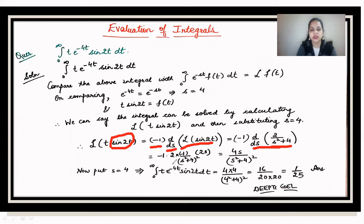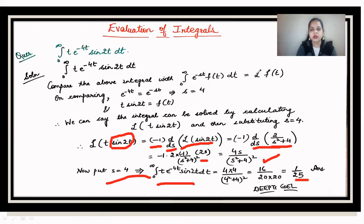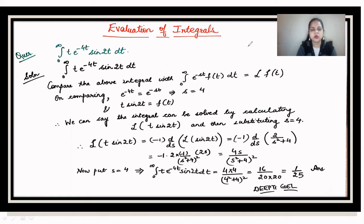Differentiating, we get 2 · (2s) / (s² + 4)² = 4s / (s² + 4)². Now substituting s = 4: 4·4 / (16 + 4)² = 16 / 400 = 1/25. So the value of the integral is 1/25.